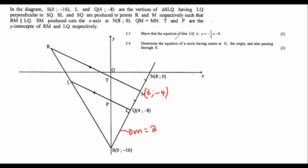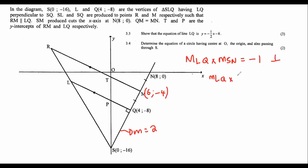Show that the equation of the line LQ is given by that — for three marks. They want the equation of the line LQ. What you should identify is that these lines are perpendicular. When two lines are perpendicular, you can multiply their gradients. So the gradient of LQ multiplied by the gradient of SN should always give minus one. The gradient of LQ multiplied by the gradient of SN, which is 2, should be −1. So the gradient of LQ is −½.